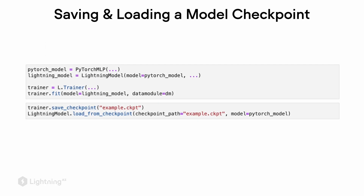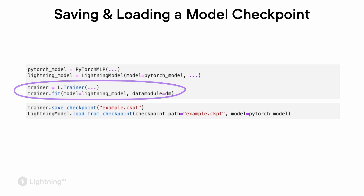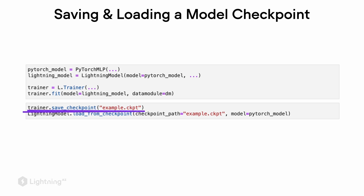When we are training Lightning models using the Lightning trainer, we call .fit(). During the fitting process, the Lightning trainer will create model checkpoints. Model checkpoints are files that contain the whole model and a snapshot of the training so that we can reload them later. However, we can also call the save_checkpoint method manually and save the model checkpoint with a preferred file name.